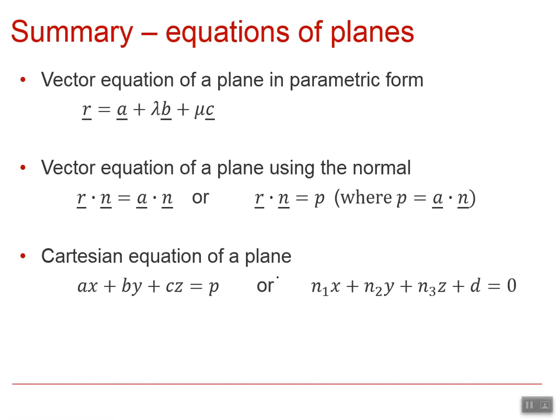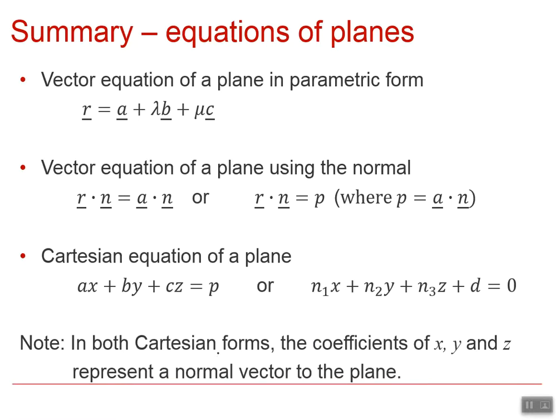And now we've seen that we can write the Cartesian equation of a plane where we've got ax plus by plus cz equals p. Remember that a, b, c gives us the normal vector to the plane or n₁, n₂, n₃ also gives us the normal vector to the plane. In both of these forms the coefficients of x, y, and z give a normal vector to the plane.